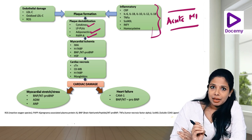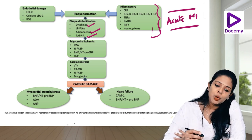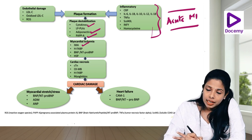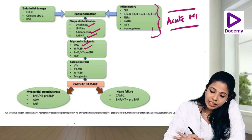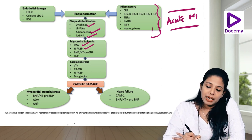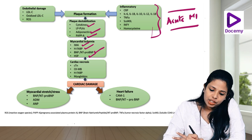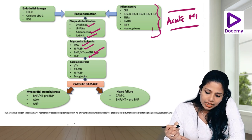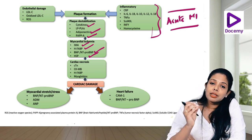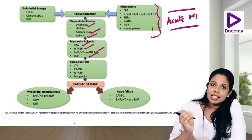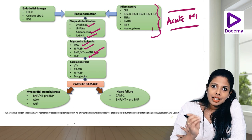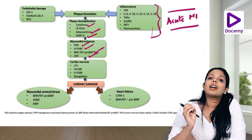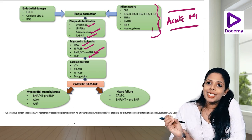This myocardial ischemia will lead to release of IMA (ischemia-modified albumin), heart-type fatty acid binding protein, brain natriuretic peptide, and HSP. These elements are released from the cardiac muscle tissues whenever myocardial ischemia occurs.